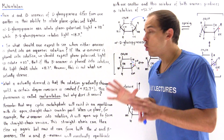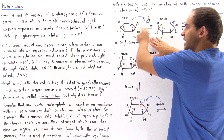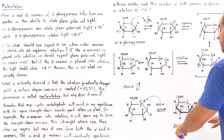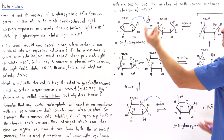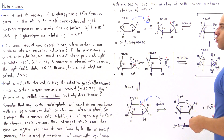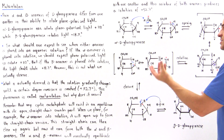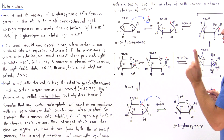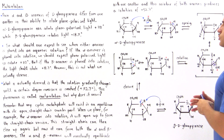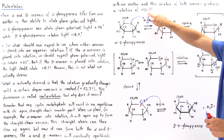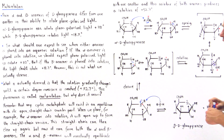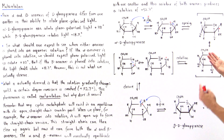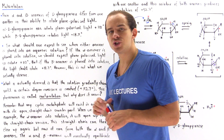If we only had the alpha anomer, the rotation would be 112 degrees. If we only had the beta anomer, the rotation would be 18.7 degrees. But because we have a mixture of both — an equilibrium reaction taking place — the mixture will rotate the plane polarized light a certain other quantity. Specifically for D-glucopyranose, it's 52.7 degrees. For other sugar molecules, this value will be different, and this reaction causes the phenomenon known as mutarotation.